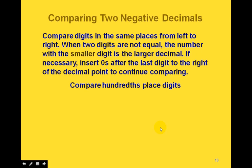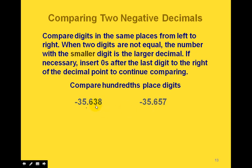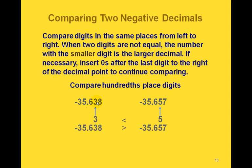For negative decimals, the process works the same way, except when you reach two digits that are not equal, the number with the smaller digit gives the larger decimal value. For example with two negative values: the tens, ones, and tenths places all have equal digits. When we get to the hundredths place we have a 3 and a 5 — they're not equal. Since 3 is the smaller digit, that gives us the larger decimal value, so the number with the 3 is greater than the number with the 5.